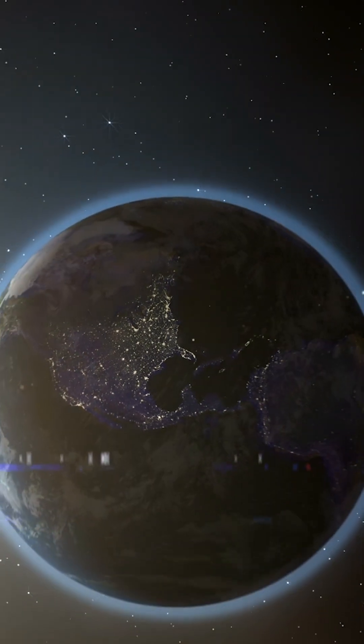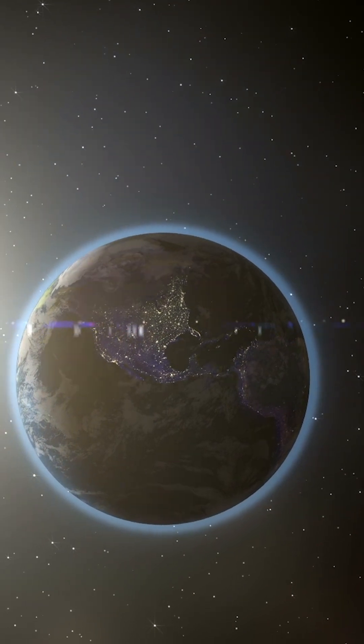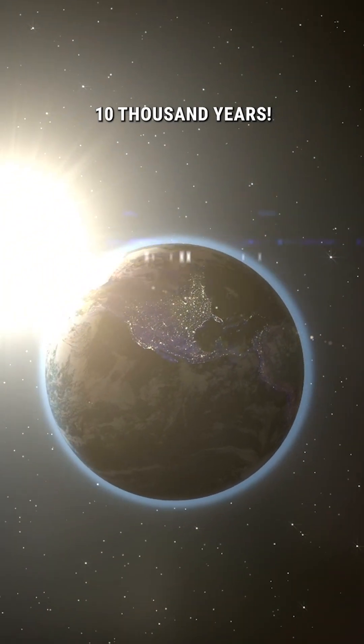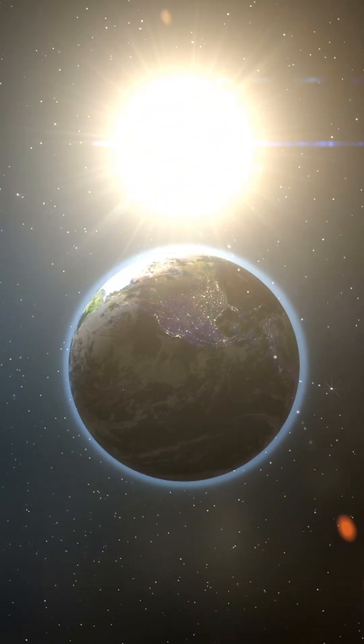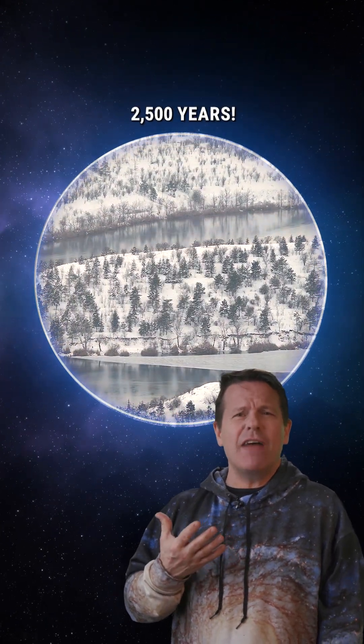And say goodbye to your birthday parties. It would take about 10,000 years for Earth to complete just one orbit around this big star. Each season would last 2,500 years.